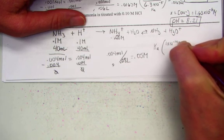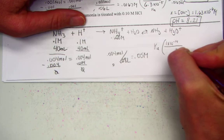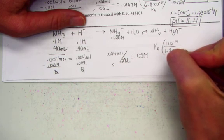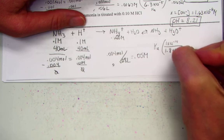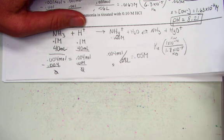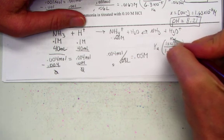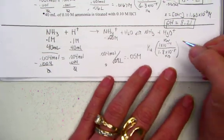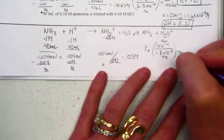We'll use the ion product constant of water, 1e-14, over the known value for Kb of ammonia, 1.8 times 10 to the negative fifth. We can find that in our appendix D, or perhaps we've used it just enough to where you're beginning to memorize. Ammonia and acetic acid share the same value for Ka and Kb.